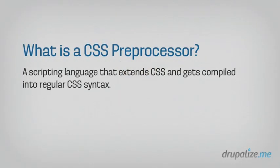What is a CSS preprocessor? At its most basic, a CSS preprocessor really is just a scripting language that extends regular CSS, and then you use some sort of program or application to compile that scripted language into the regular CSS syntax that your browser is expecting to see and use. So it's just a matter of learning a new language that's very similar to CSS but has some additional things you can use, and sorting out how you're going to get that compiled into regular CSS.